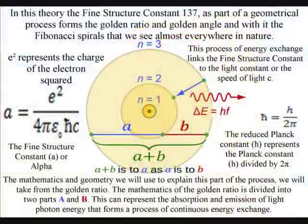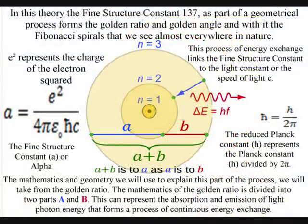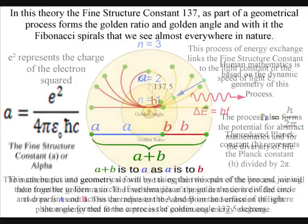The mathematics of the golden ratio is divided into two parts, a and b. This can represent the absorption and emission of light photon energy that forms a process of continuous energy exchange. This can be put into geometrical form by taking the two ends of the line and joining them together to form a circle.